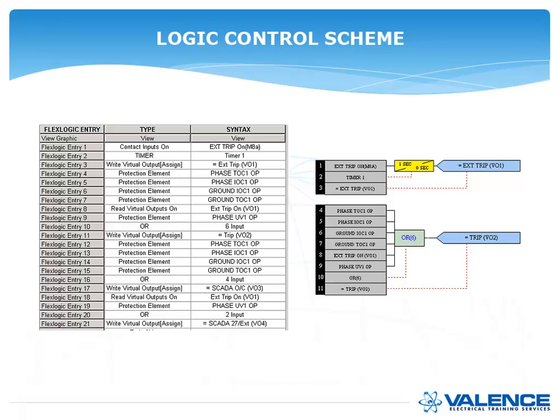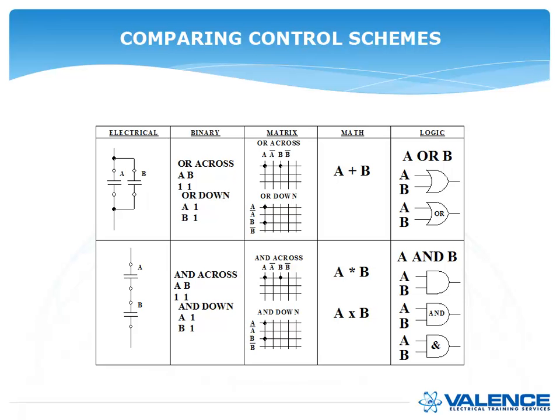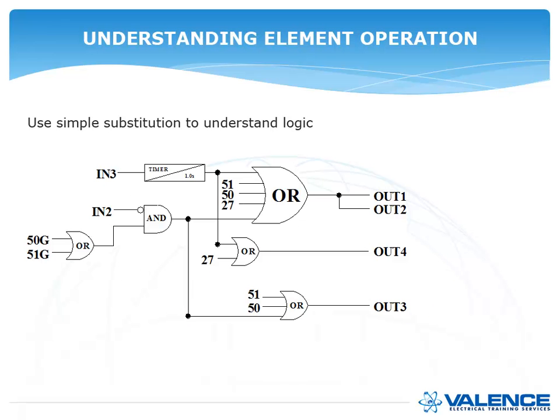So here is a chart that combines all of the different schemes. So if I have an electrical schematic with two contacts in parallel, in binary, that would mean, if it was OR across, that would mean two 1s together. Or if OR was down, that would mean an AB with a 1 and 1 like that. And then you can have it also shown as a matrix. In math, that would be A or B. And then you can have a logic scheme. So you can see you can translate from one scheme to another, or you can just translate everything to electrical to help you understand what relays are supposed to do.